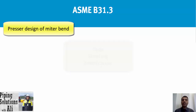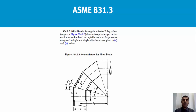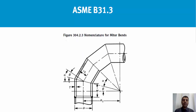I hope you find this course beneficial. In paragraph 304.2.3 of ASME B31.3, the code specifies requirements for using miter bends. I am going to follow those criteria with an example to reveal the reasons for the limited usage of miter bends in projects. In Figure 304.2.3 of B31.3, you can find the nomenclature of miter bends used for calculation of Pm, the maximum allowable internal pressure.